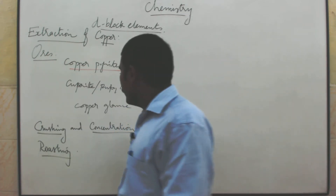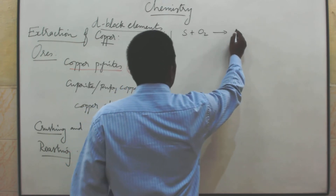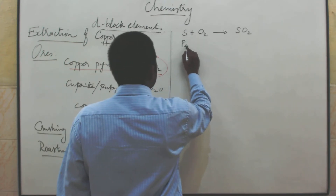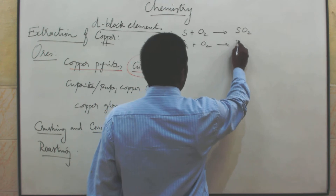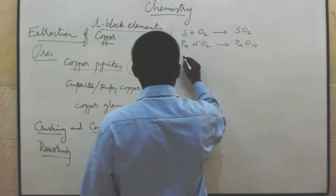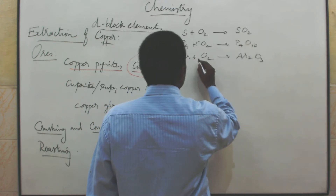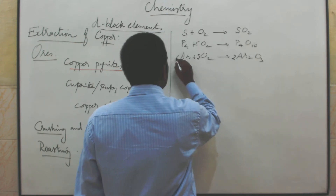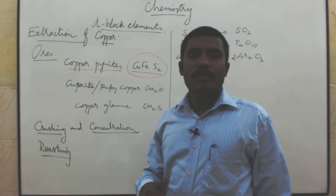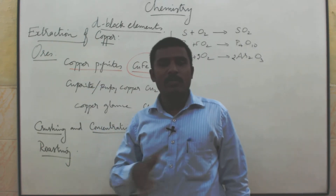For example: if it is sulphur, sulphur reacts with air to give sulphur dioxide. If it is phosphorus, phosphorus reacts with oxygen to give phosphorus pentoxide. If the impurity is arsenic, arsenic reacts with air to give arsenic oxide.